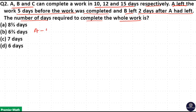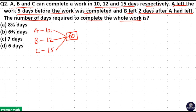A can complete the work in 10 days, B can complete the same work in 12 days, and C can complete it in 15 days. The work rate is the same. Take the LCM of 10, 12, and 15. The LCM is 60, meaning total work is 60 units. 10 goes 6 times in 60, 12 goes 5 times in 60, 15 goes 4 times in 60. So A has 6 units efficiency, B's efficiency is 5, and C's efficiency is 4.